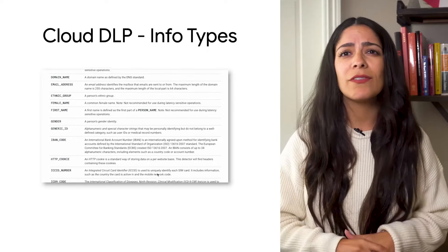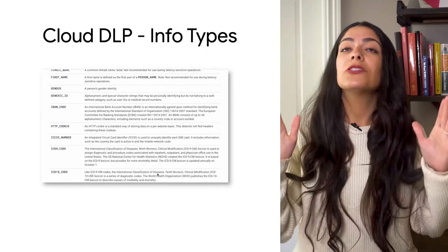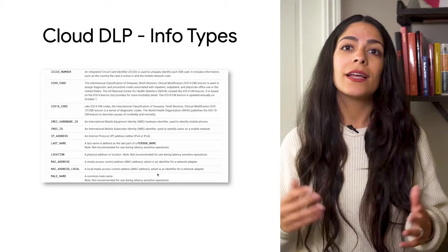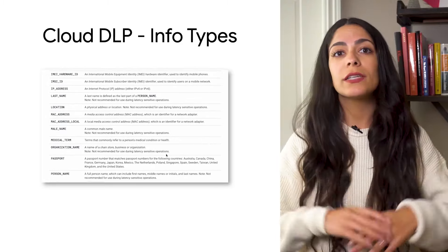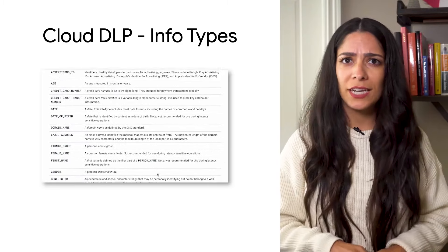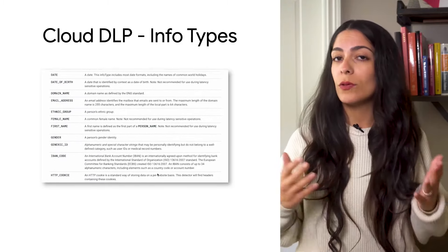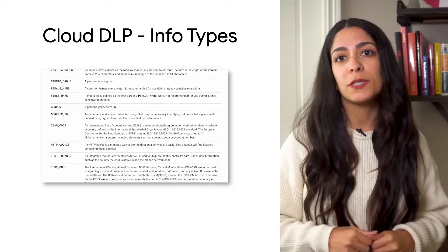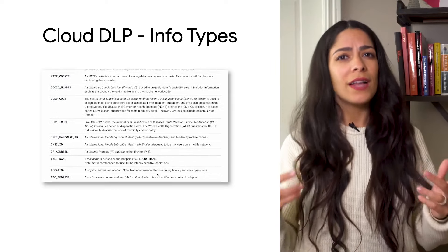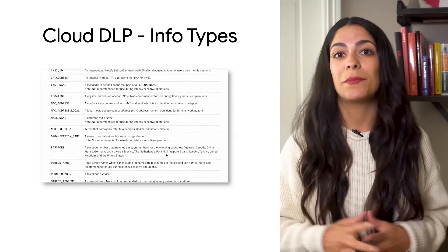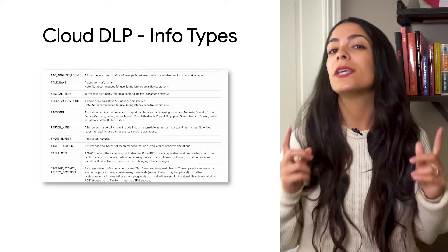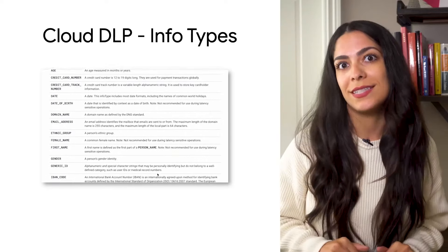Out of the box, DLP provides over 150 different info types, including personally identifiable information, financial data types, global and region-specific types, and more. And you can extend these with custom info types and detection rules to meet your business's needs.